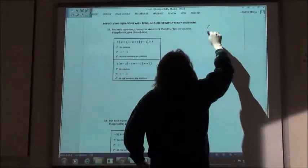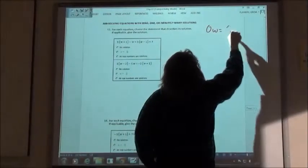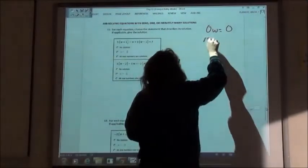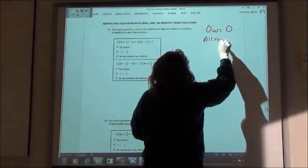If we get 0w equals 0, 0 times every number in the world is always 0, right? 0 times 1 is 0, 0 times 5 is 0. That's when we pick the all real numbers are solutions.